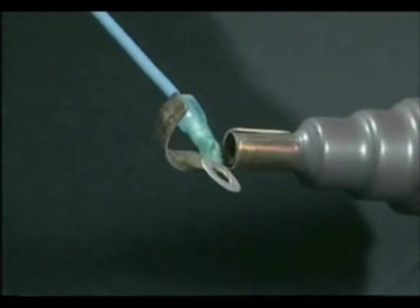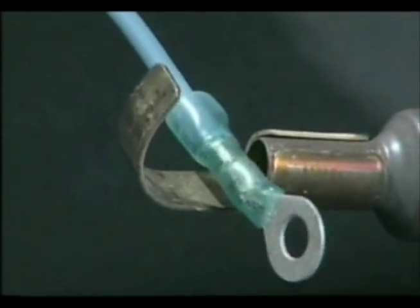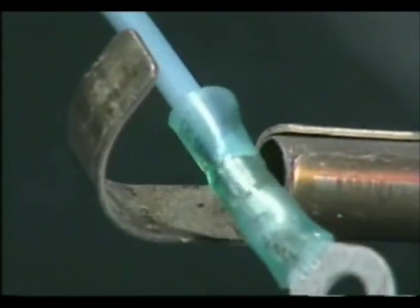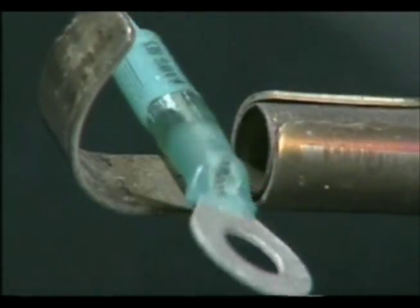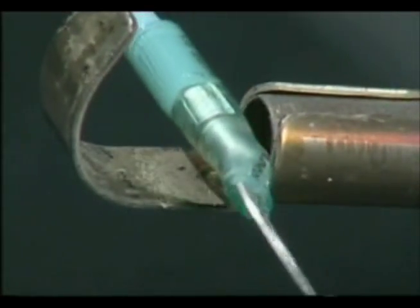Heat the connector evenly until the tubing is fully recovered. Continue to distribute the heat over the solder sleeve. Do not isolate the heat too long in one place.